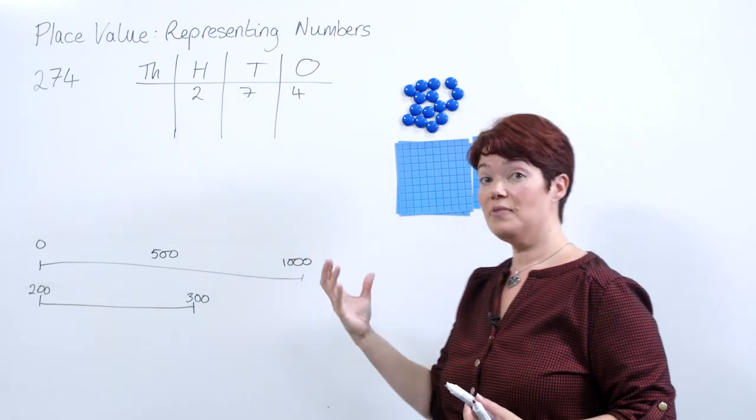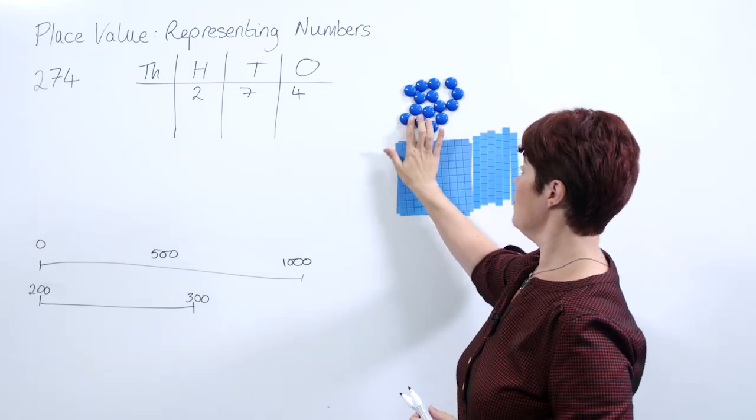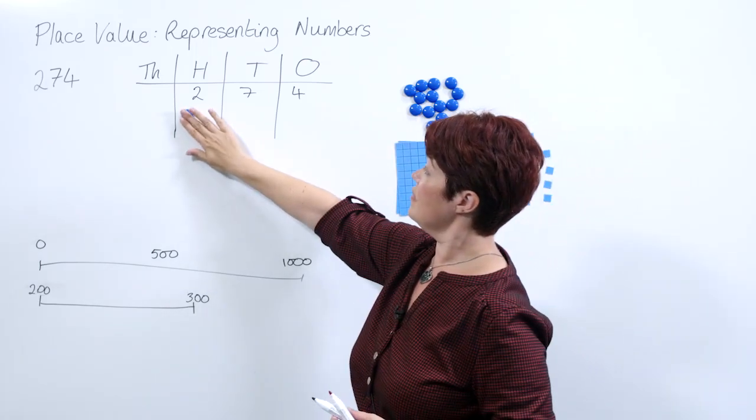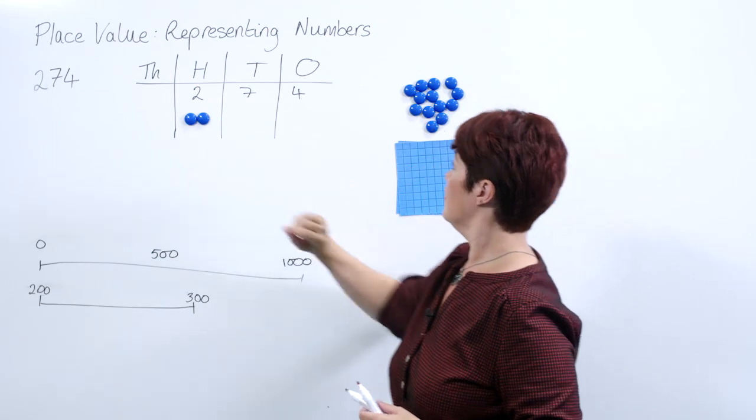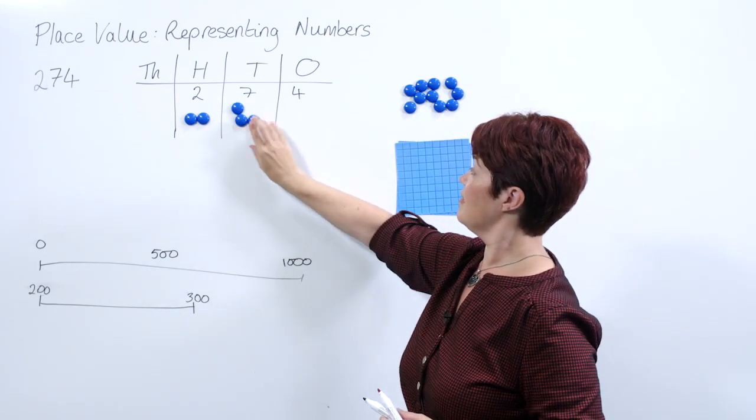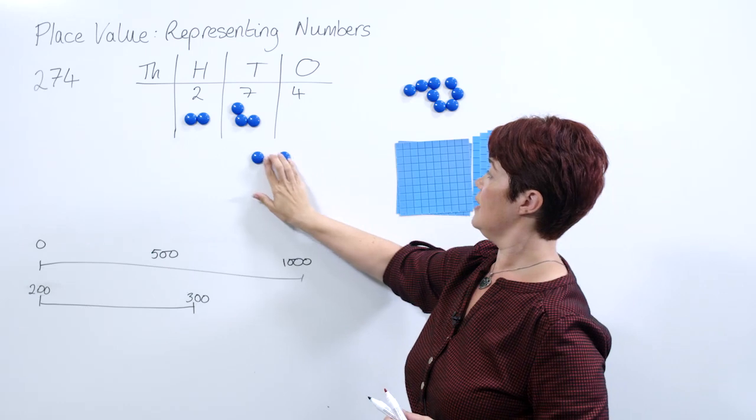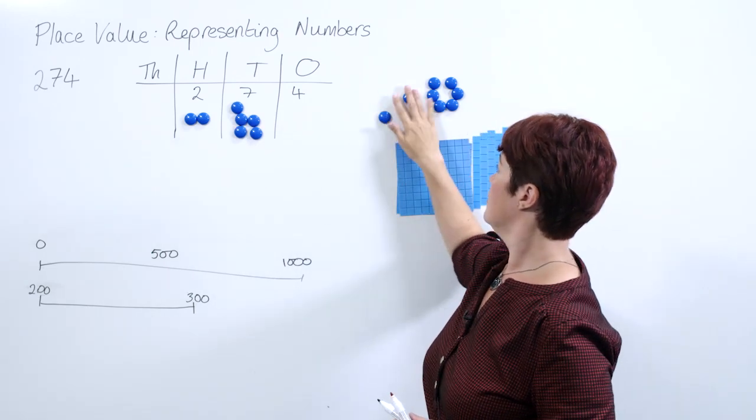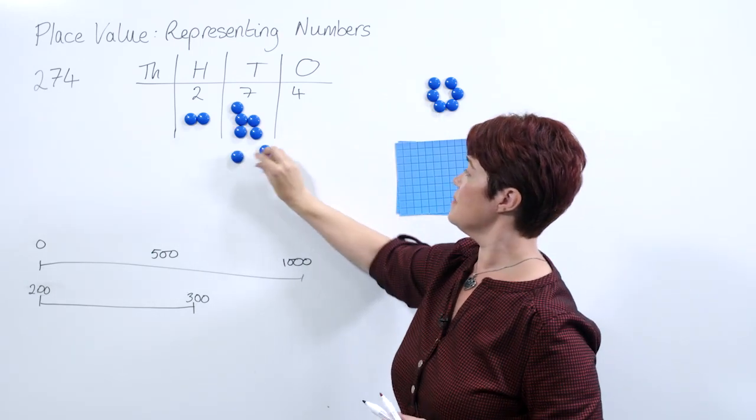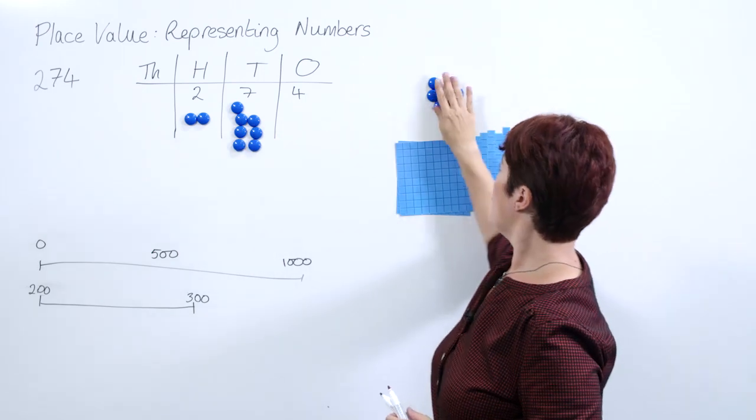Now we're going to use our counters. We could use counters to start this off, so we could put two counters in our hundreds, we can use our counters to put seven in our tens, and then we can use four counters in our ones column.